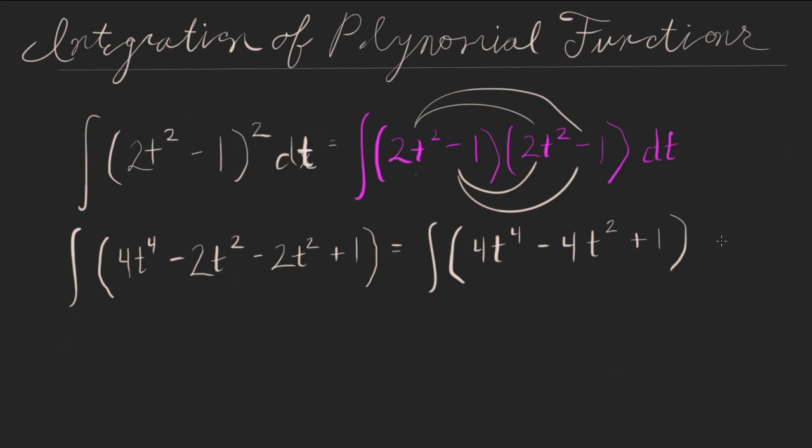And then now we can separate these into components. So we'd have the integral of, can't forget that. So then we'd have the integral of 4t to the fourth dt, minus the integral of 4t squared dt. I hate when it's dt because the t's start to look like plus signs and it gets confusing. So, plus, we have just the 1 dt.